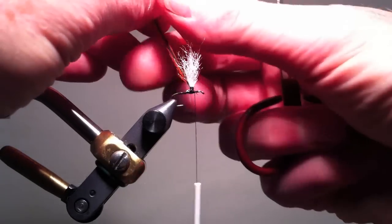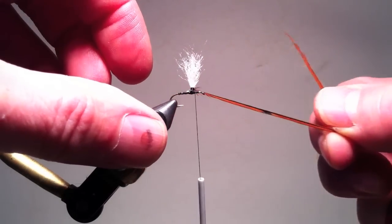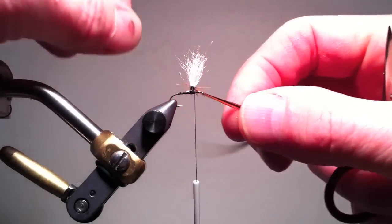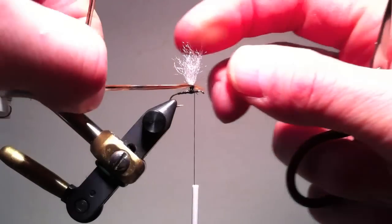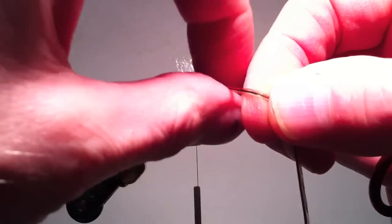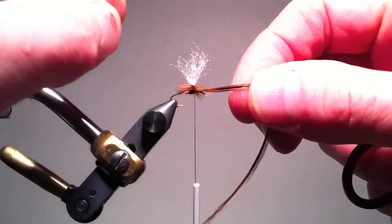I move my thread forward, keeping it close to the post before winding the hackle. The hackle now starts at the base of the post. Each successive wind is below the previous wind until I have as many winds as I want or I am at the base.